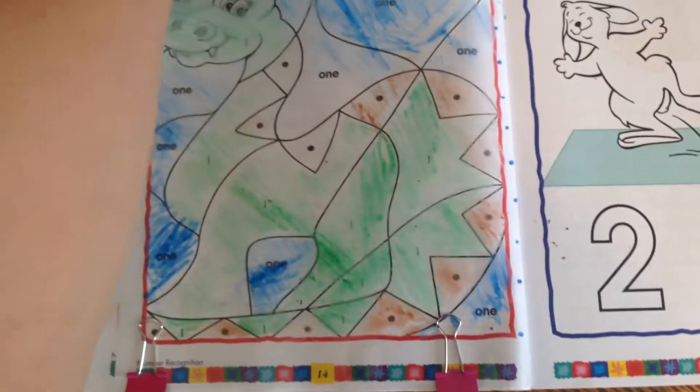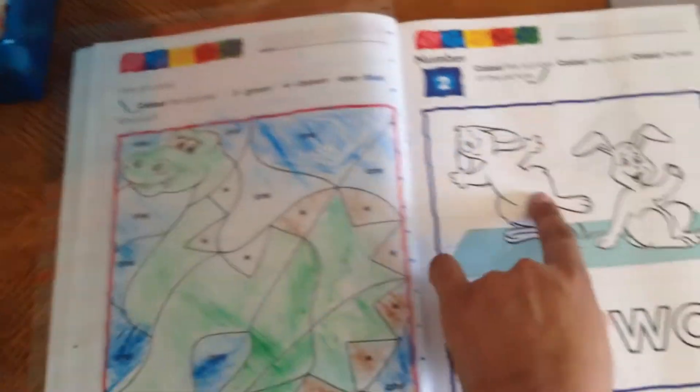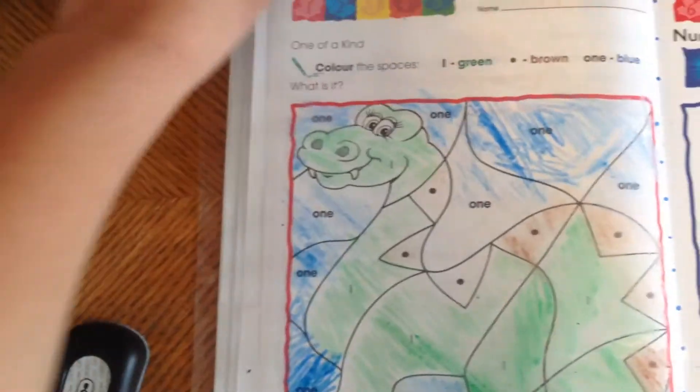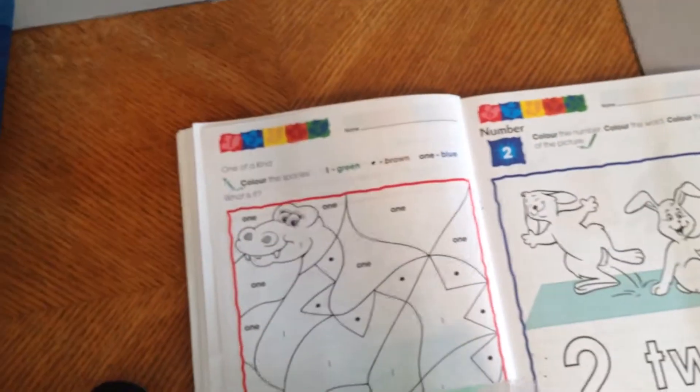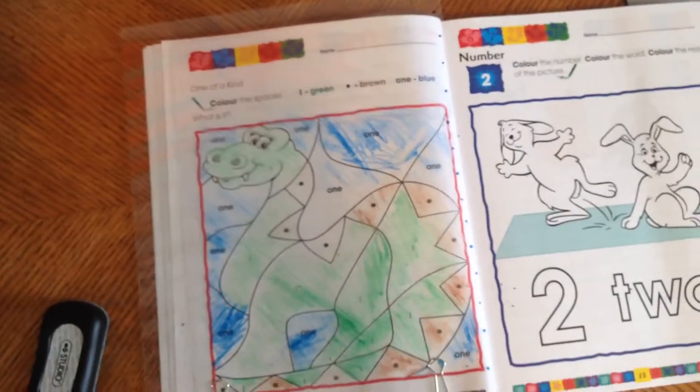I would recommend keeping a couple of laminate sheets on hand to work on different pages simultaneously and then voila, it's all nice and clean and you can reuse these workbooks with all of your kids.